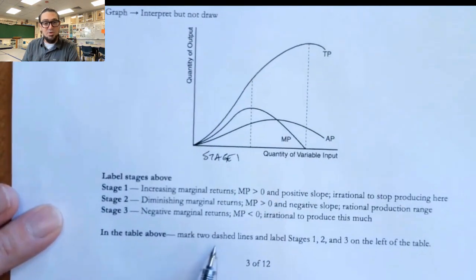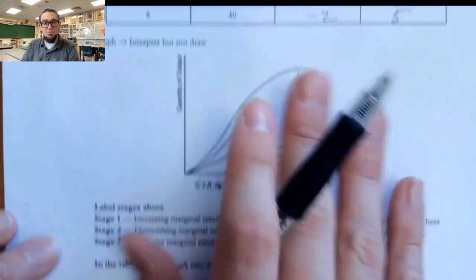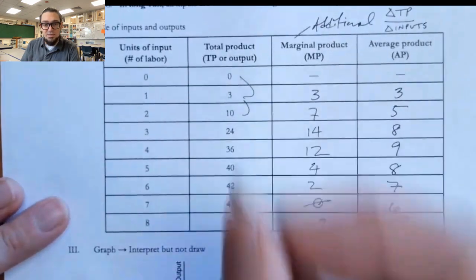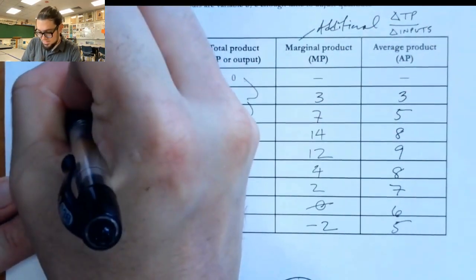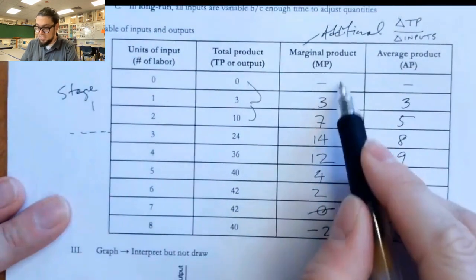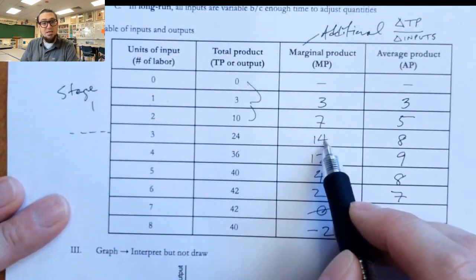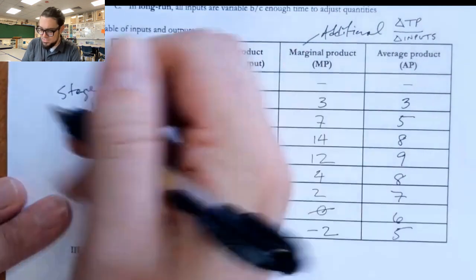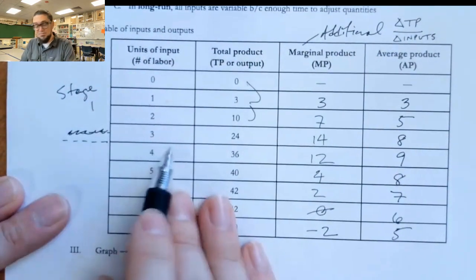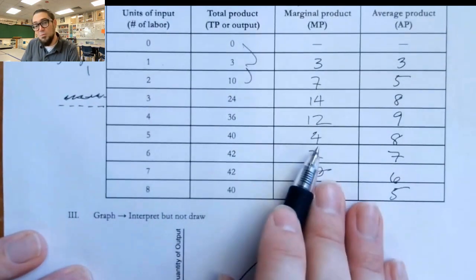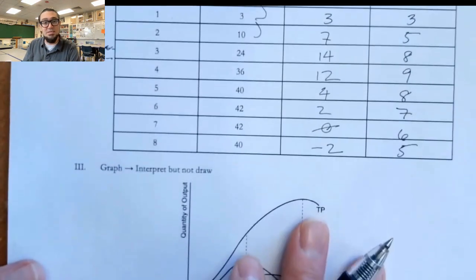So in this first stage, we would just say this is stage one right here, increasing marginal returns. And here in the table above, mark two dashed lines and label stages one, two, and three on the left. All the way up to here is stage one. And that's because our marginal products are rising up until we get to that third worker. All the way at the end of that third worker. With the fourth worker is actually where we would say stage two begins.